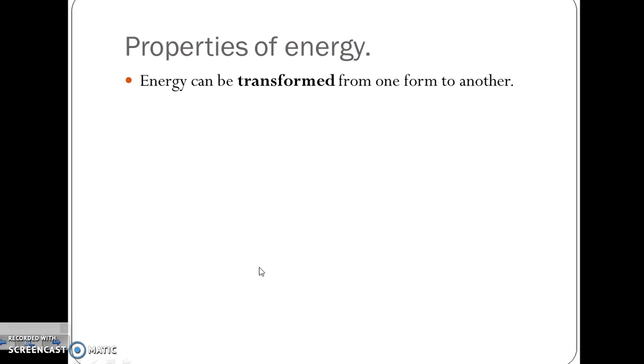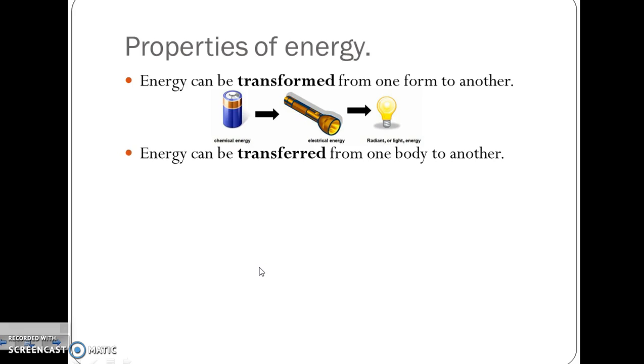Properties of energy. Energy can be transformed from one form to another. For example, we've got chemical energy in a battery and it can become light energy using a torch. Energy can be transferred from one body to another, for example when you are playing baseball you've got energy in your arms and then that energy can be transferred to the baseball.